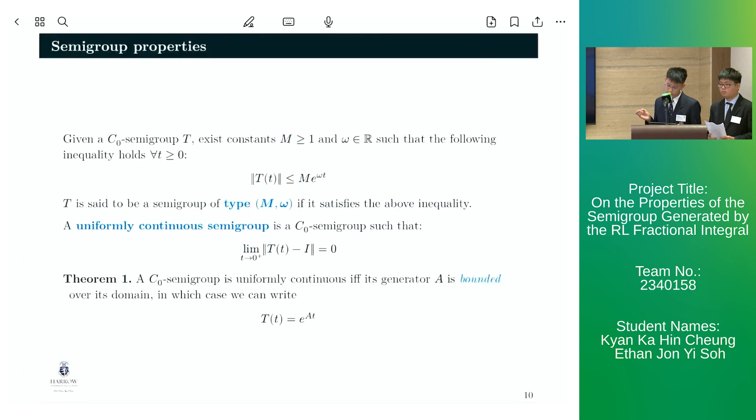Now, given a C0 semigroup T, we have that there exist constants M and omega, such that the following inequality holds, and in which case T is then said to be a semigroup of type M omega.